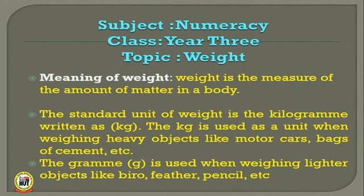When you measure how heavy an object is, that is weight. If you want to know how heavy an object is, you are taking the weight of that object or body. The standard unit of weight is the kilogram, written as kg. The kg is used as a unit when weighing heavy objects.